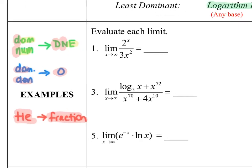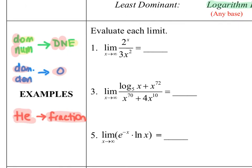In the first example, it's a limit as x approaches infinity, so I apply my dominant term rules. Up in the numerator I have an exponential function because the variable is in the exponent position. Down in the denominator I have a power function because the variable is the base. So 2 to the x is my dominant term — it lies in the numerator — and when your dominant term is in the numerator, this is a DNE. My answer to number one is DNE.